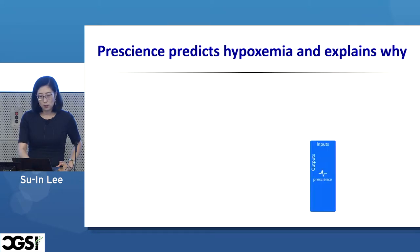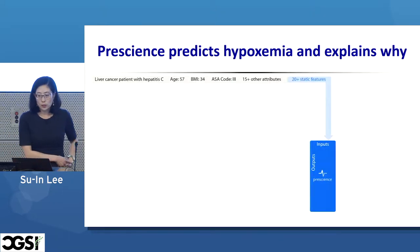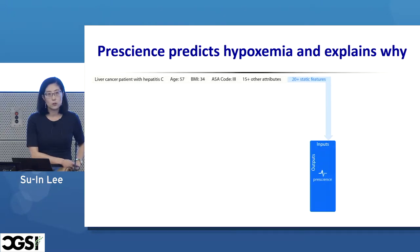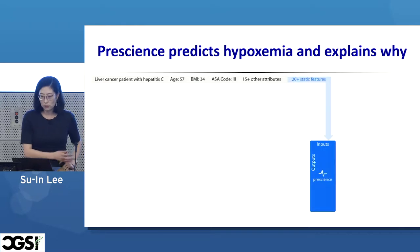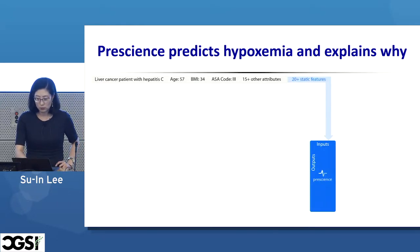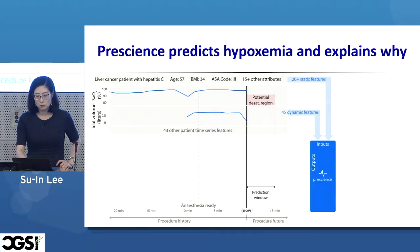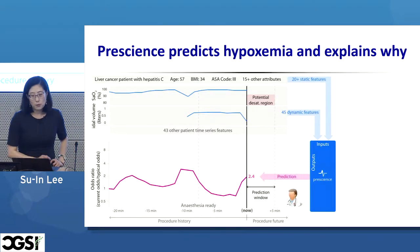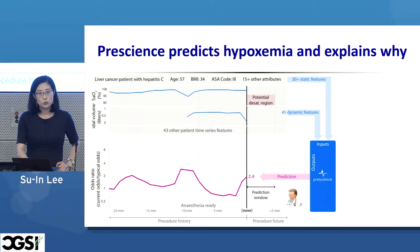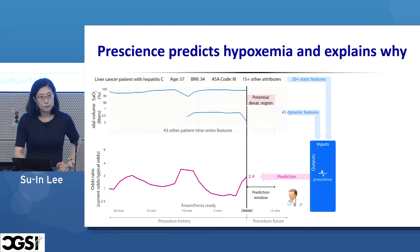Prescience takes as input about 20 static features such as surgical procedure, age, weight, demographic information, ASA code, and diagnostic code, and then 45 dynamic features such as real-time minute-by-minute information from patient monitors including heart rate and blood oxygen levels. It makes a real-time prediction in the form of a numeric risk representation — for example, 2.4 odds ratio within the next five minutes. We are predicting the future, not the present.